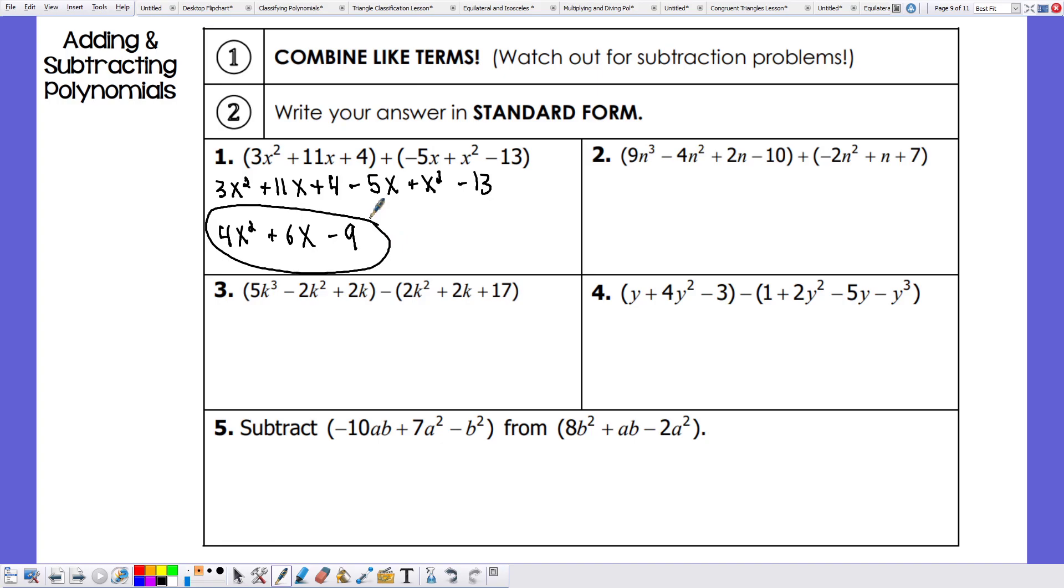Let's try number 2. We have 9n to the third power minus 4n squared plus 2n minus 10 minus 2n squared, 9n squared plus n plus 7. Now I note that there's no other terms with n to the third power, so that one's going to stay the same. n to the third power.